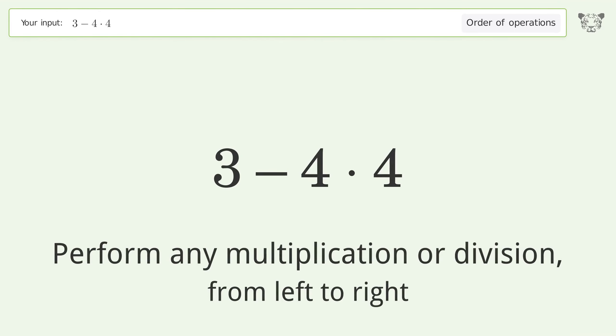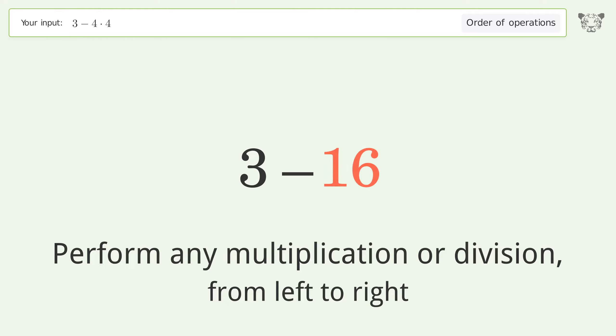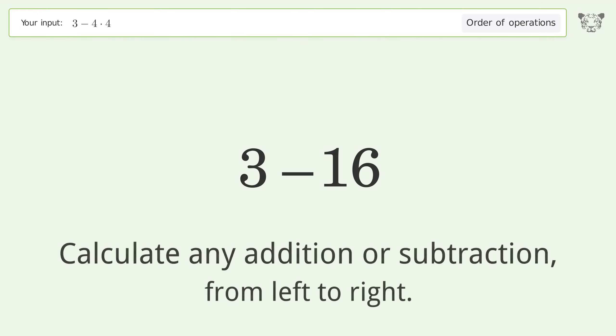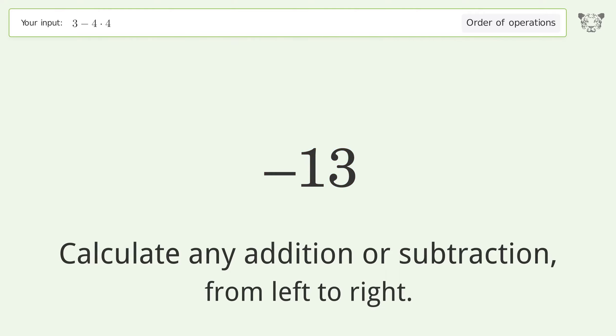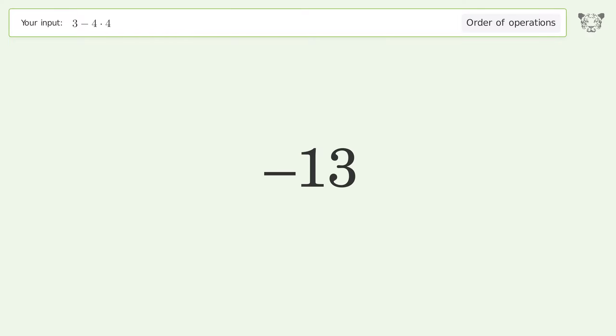Perform any multiplication or division from left to right: 4 times 4 equals 16. Then calculate any addition or subtraction from left to right: 3 minus 16 equals negative 13. And so the final result is negative 13.